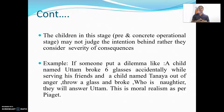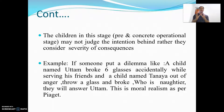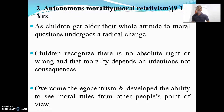Another example: a child named Utam broke six glasses while serving his friends for a noble purpose, and a child named Tanya broke one glass out of anger. If you ask children aged five to nine who is naughtier, they will say Utam is naughtier because he broke six glasses, rather than Tanya who broke only one. The child considers the consequences and severity of consequences rather than the intention behind the act. This is moral realism.